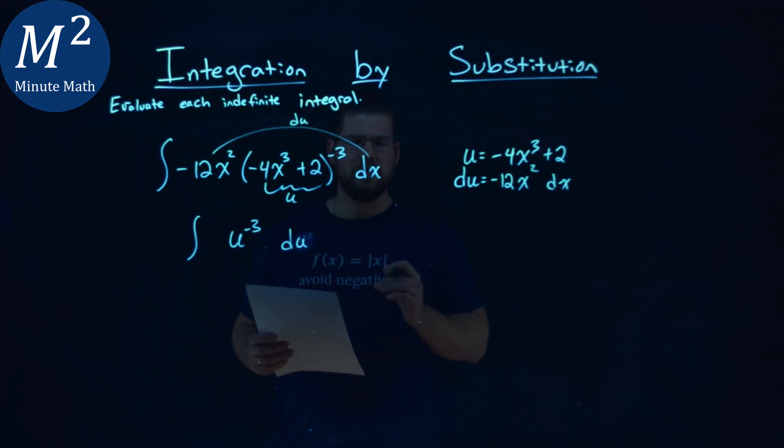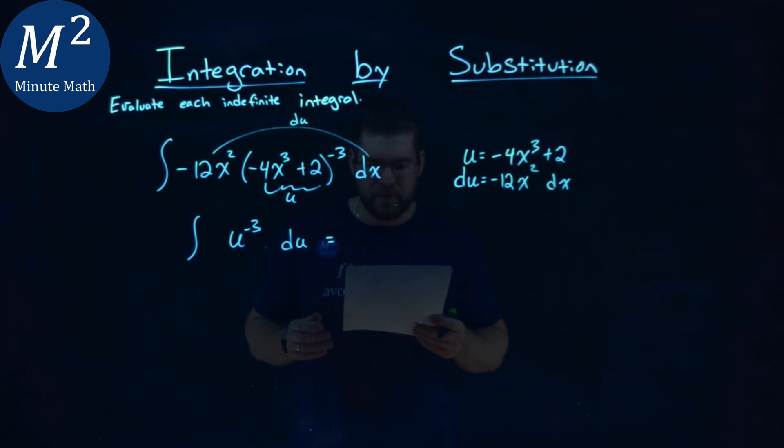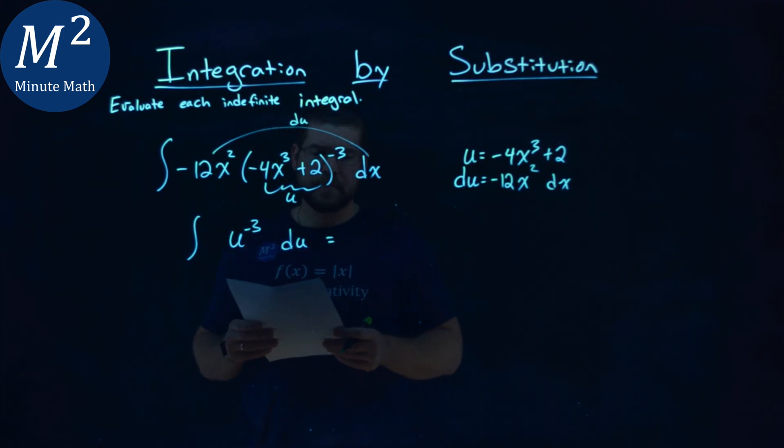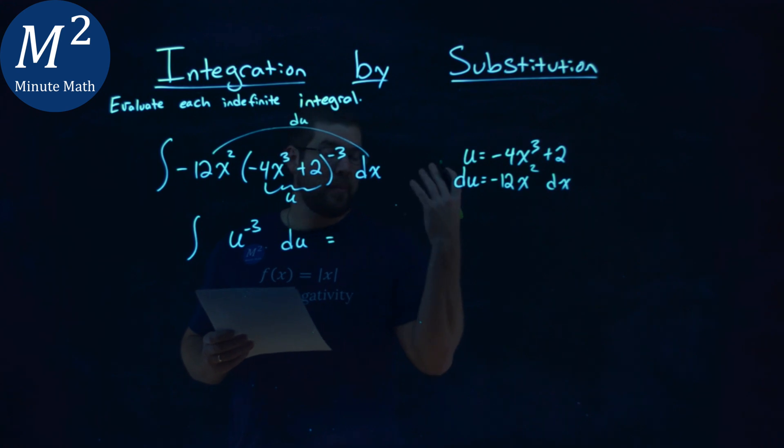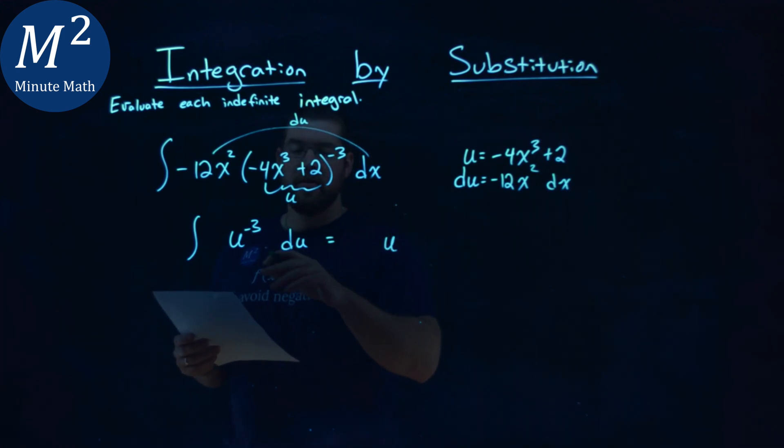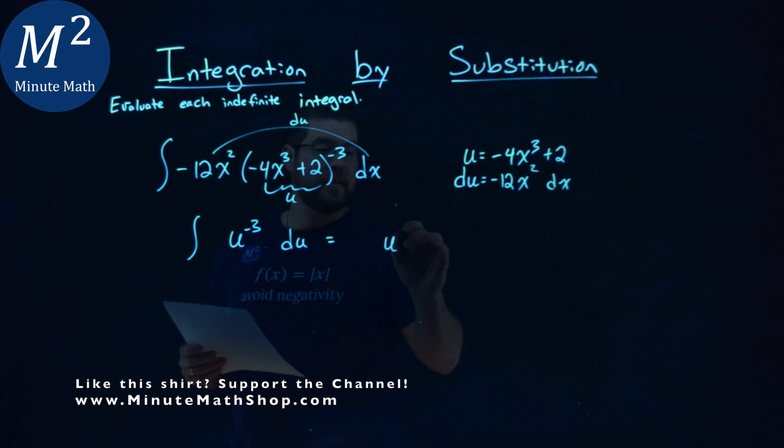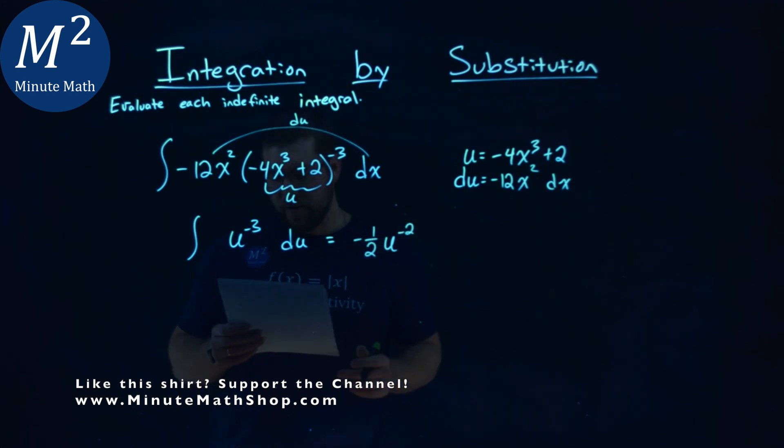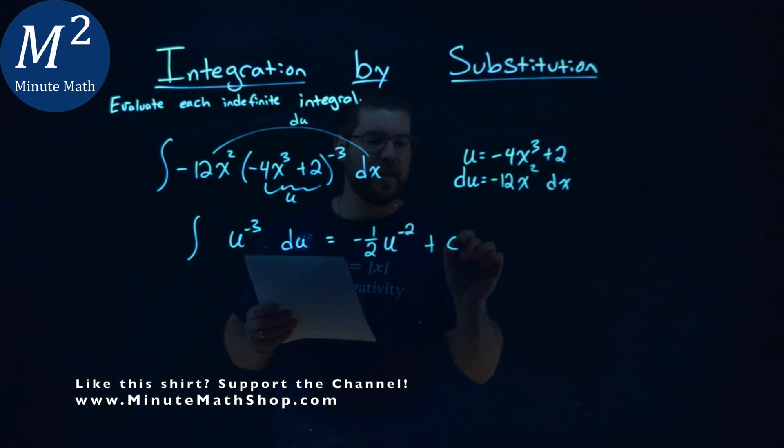Much easier now. Let's apply our power rule. It's a little tricky when we have a negative exponent. We have to add the exponent by 1 - think opposite of derivative. So negative 3 plus 1 is negative 2, but we want to cancel that out and put a negative one-half out front, and then we have our plus c.